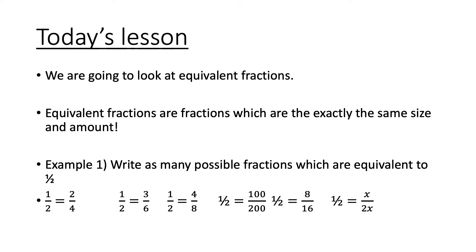Today's lesson: equivalent fractions. Equivalent fractions are fractions that are exactly the same size and amount. To get an equivalent fraction, whatever you multiply the numerator by, you must multiply the denominator by the same number. For example, one half equals two quarters — I multiplied top and bottom by 2, so 1×2=2 and 2×2=4.